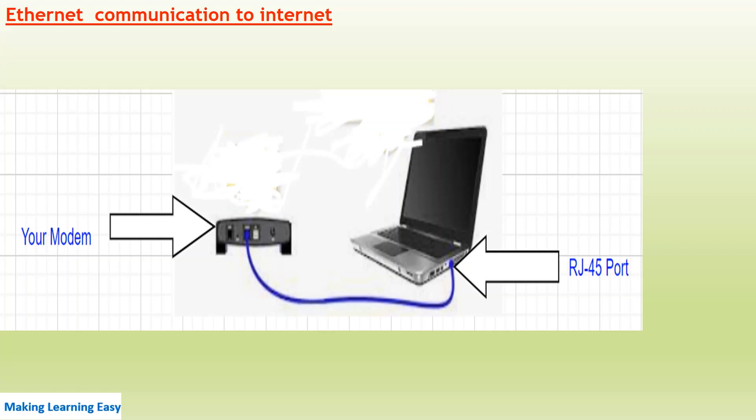For ethernet communication to the internet — suppose you have a laptop and an internet service provider connection at home. The ISP provides you a modem or router. You can connect one end of the ethernet cable to your laptop and the other end to the router or modem. Alternatively, you can also use Wi-Fi if your modem or router supports it.